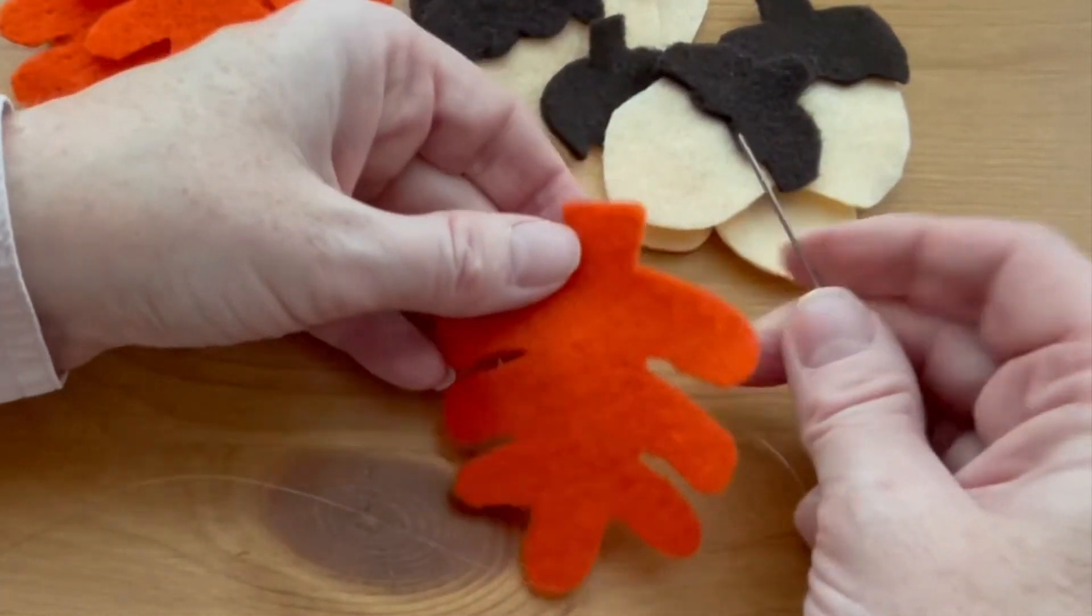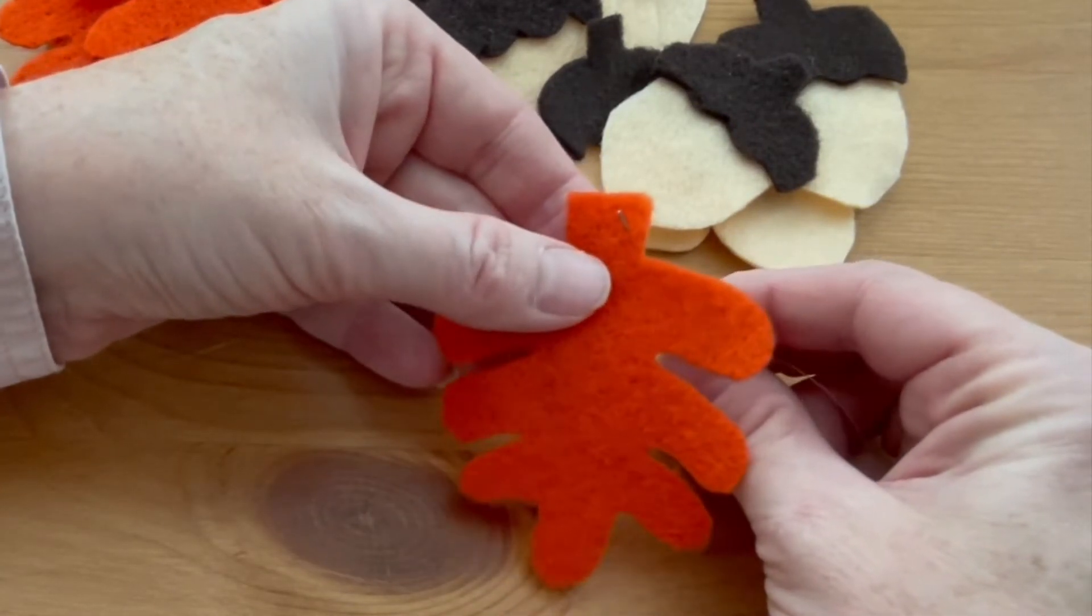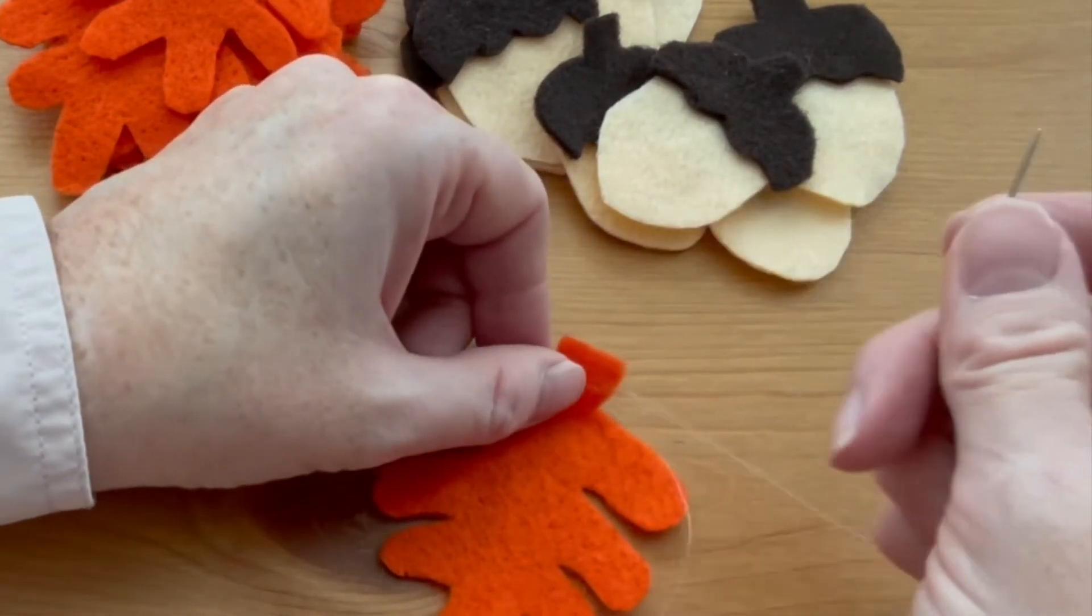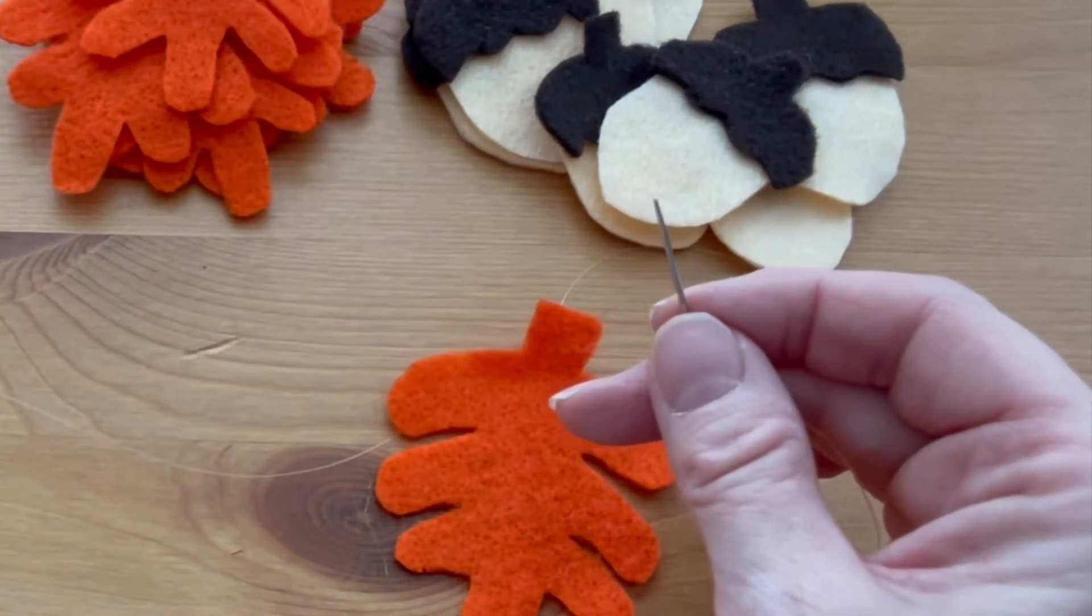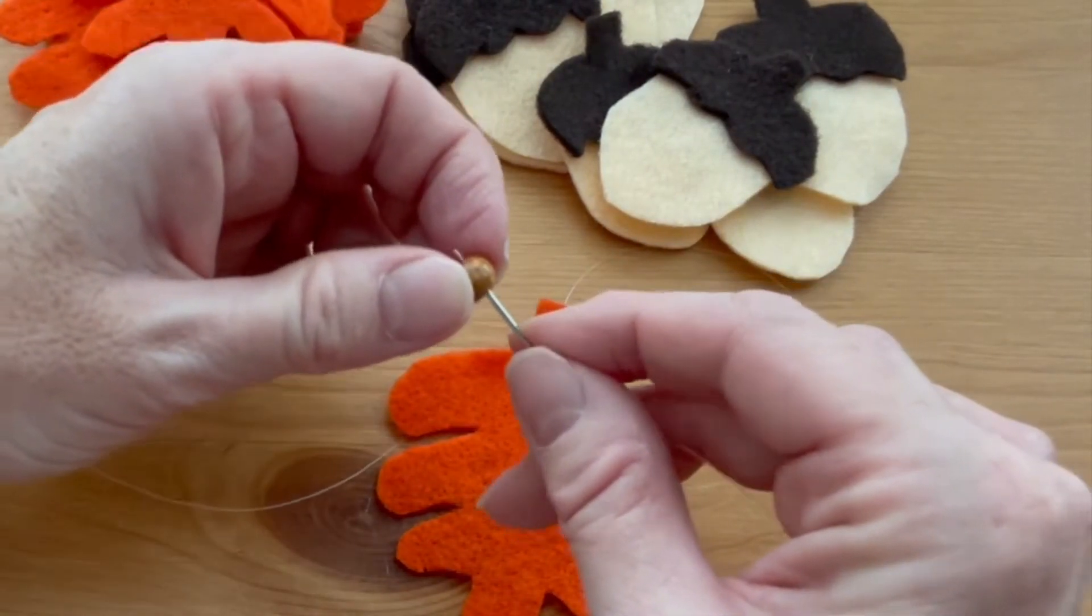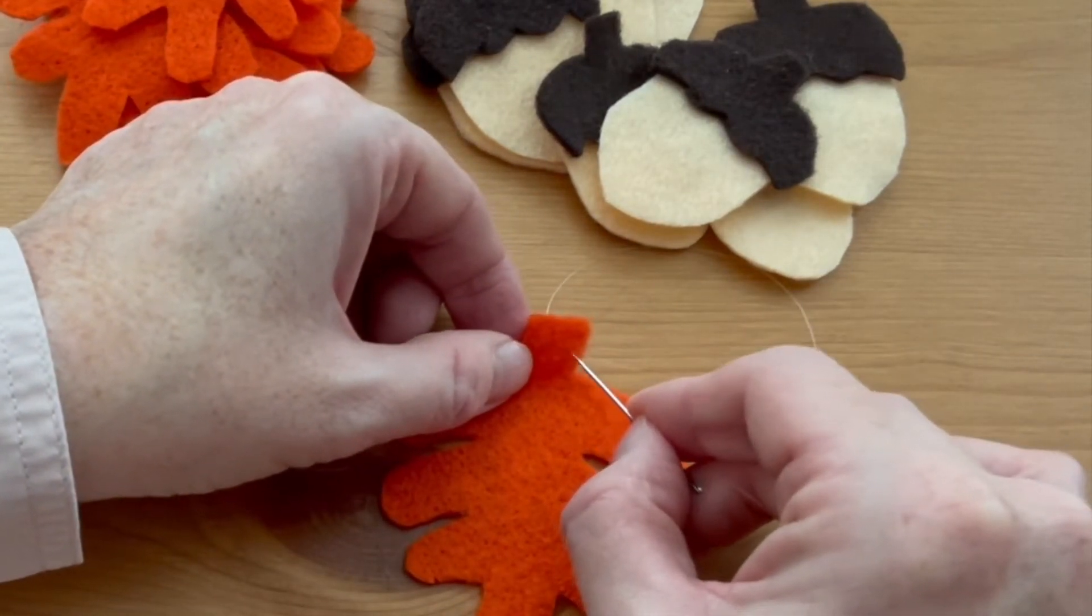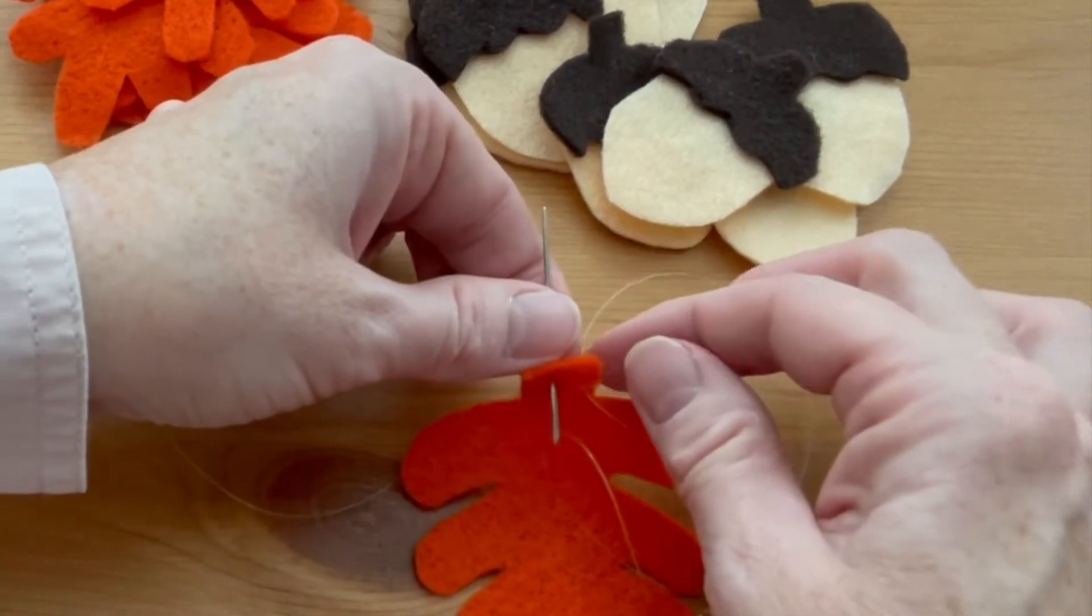I'm going to start with a leaf and run the needle up at the edge of the stem. Then I'm going to thread on one of my beads and go back down, leaving a little gap between the stitches at the other edge of the stem.